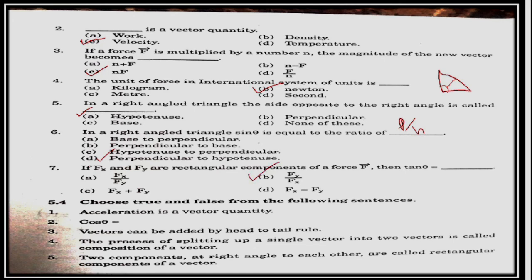Now choose true or false. Acceleration is a vector quantity. True. Because acceleration has direction, if it has magnitude and direction, it is a vector quantity. Cos theta is equal to, this is misprinted in the book. Cos theta is equal to, what is it? Curly brown hair. Cos theta is equal to base upon hypotenuse.